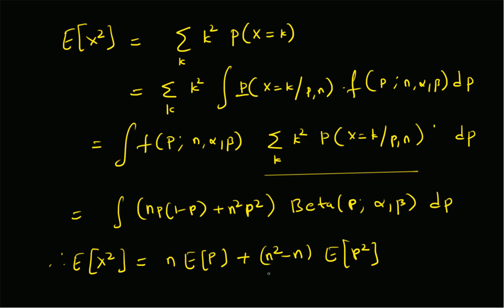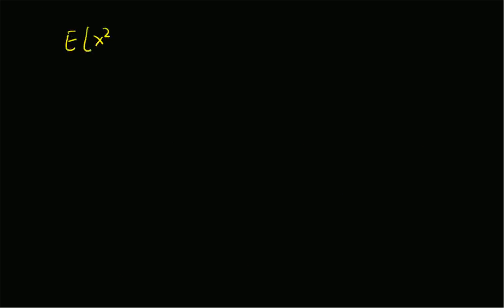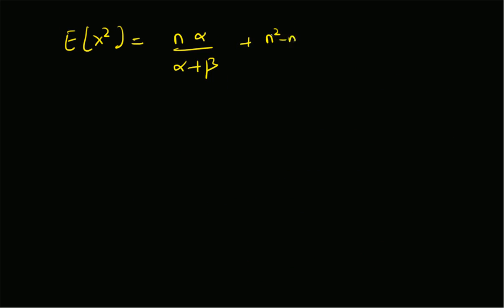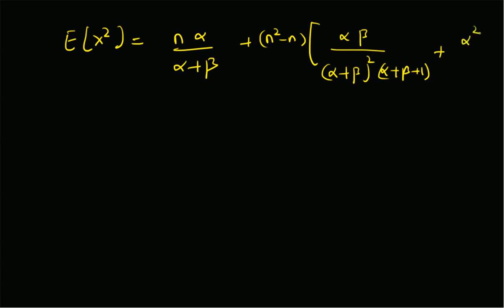Therefore, E[X²] = n·E[p] + (n²-n)·E[p²]. The mean of a beta random variable is α/(α+β), and the second moment E[p²] equals the variance of p — which is αβ/[(α+β)²(α+β+1)] — plus the square of the mean, α²/(α+β)².